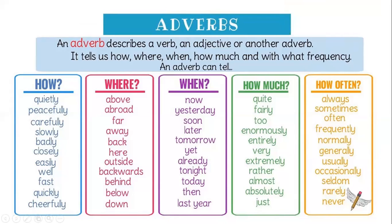Let's start by remembering what adverbs are. An adverb describes a verb — it describes an action, or an adjective, or another adverb. It tells us how, where, when, how much, and with what frequency we do things. When we say 'how,' we have adverbs like quietly, peacefully, carefully, slowly, badly, closely, easily, well, fast, quickly, cheerfully.